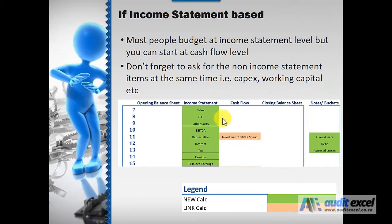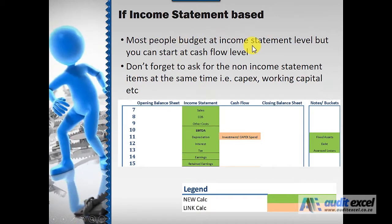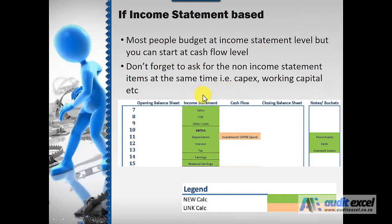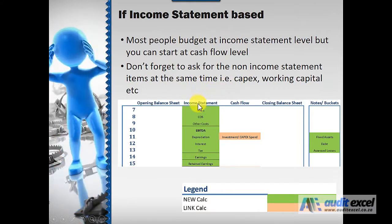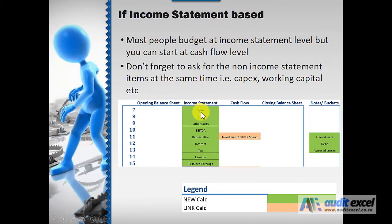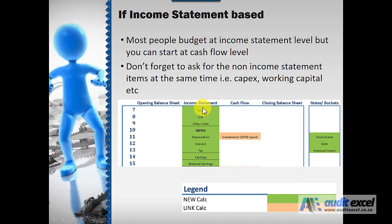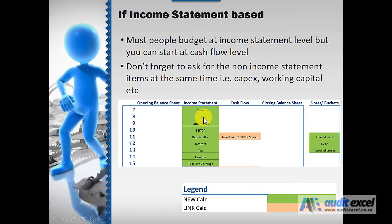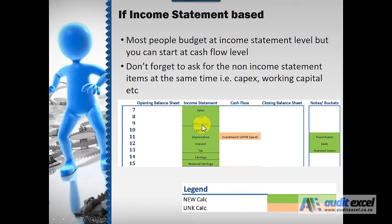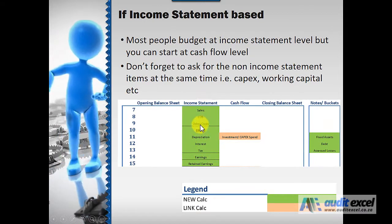The next step — most people budget at an income statement level. We prefer to start at cash flow, but for the purposes of this example we're going to go as if we start with the income statement. The next step is to get the calculations for the income statement. Notice most of these are green because these are brand new calculations. How you get to the sales figure, cost of sales, and other costs just depends on the type of financial model you're building.